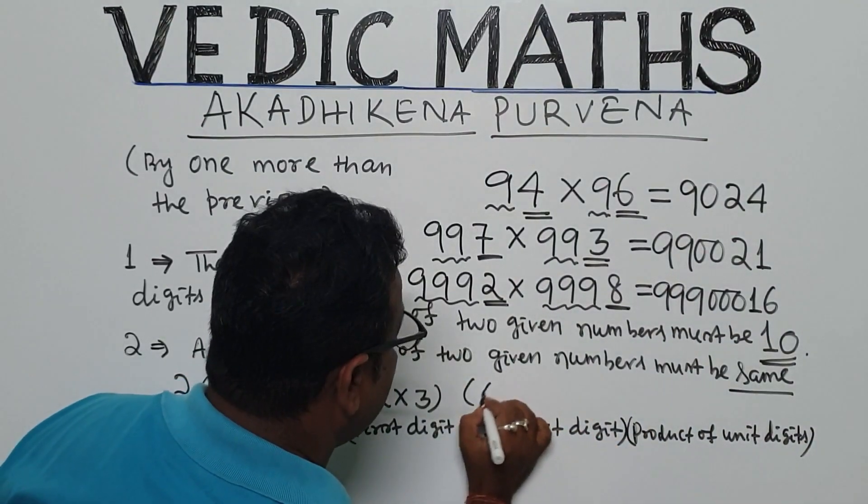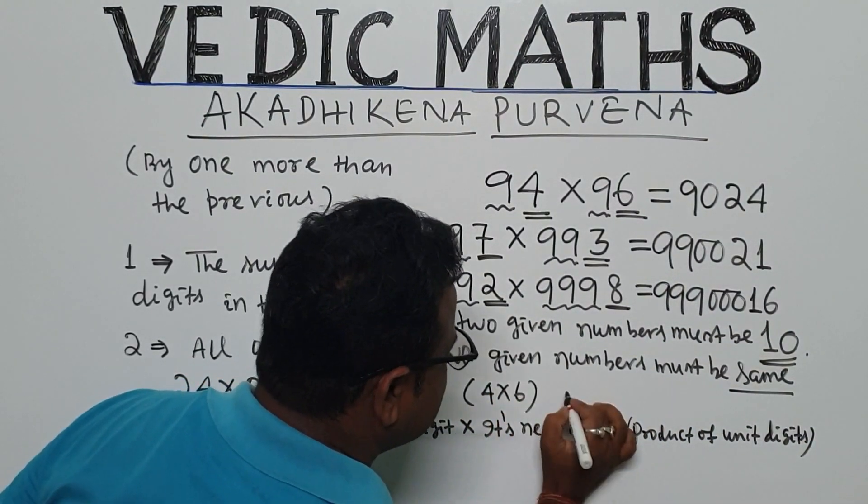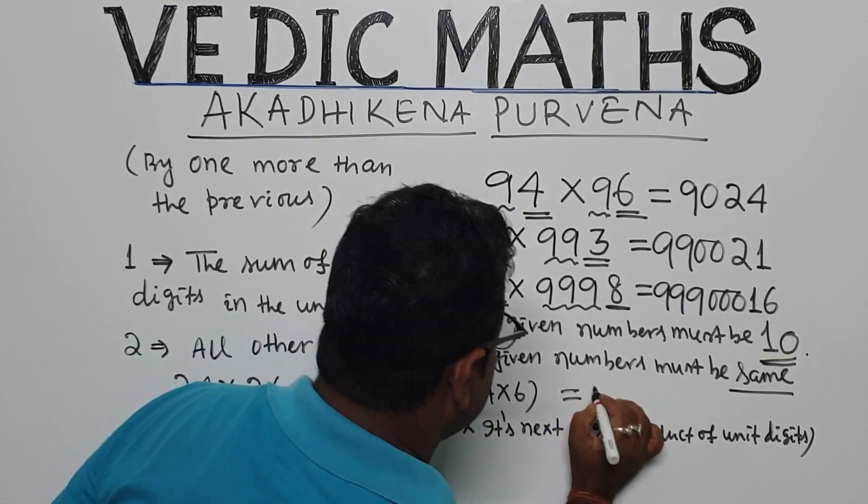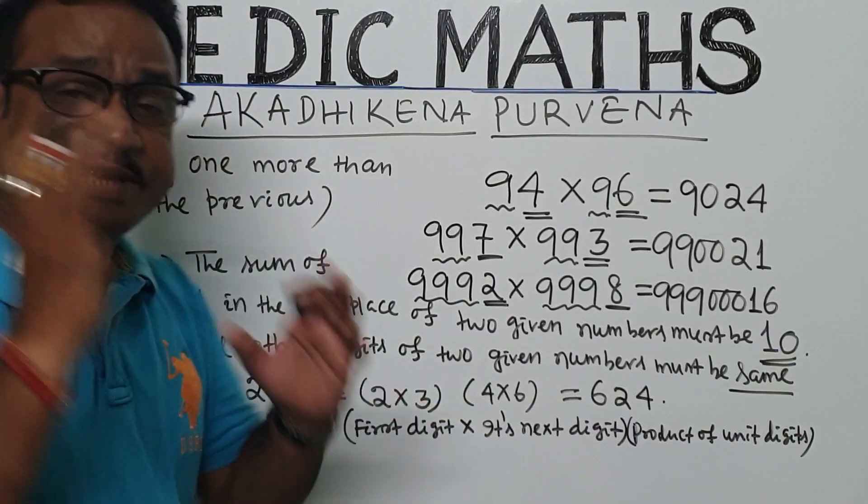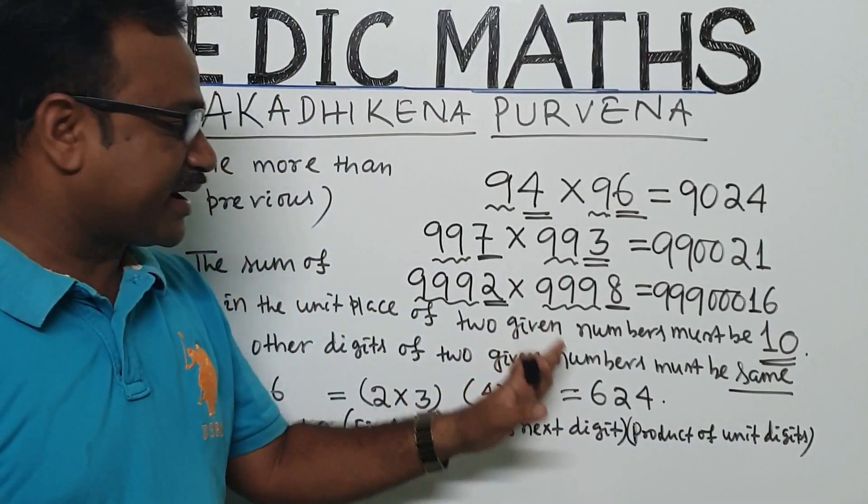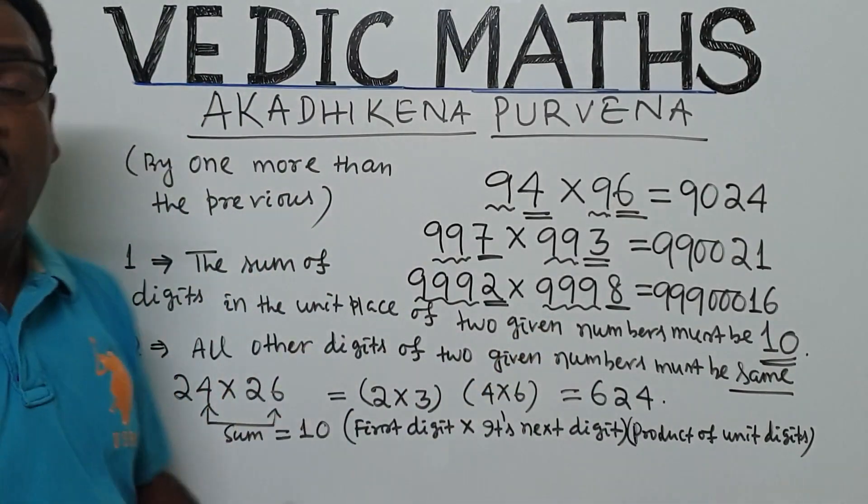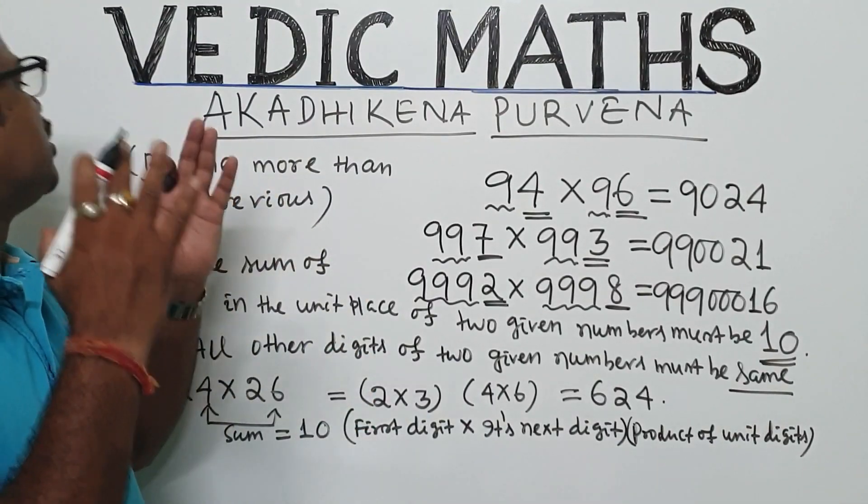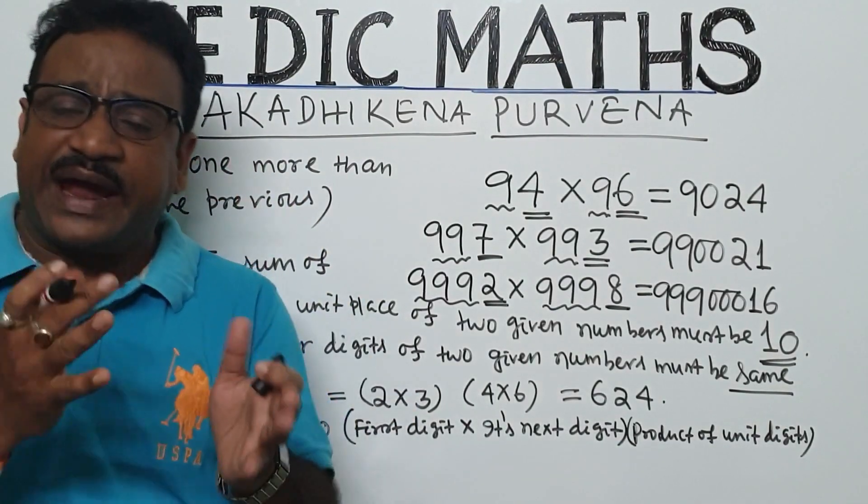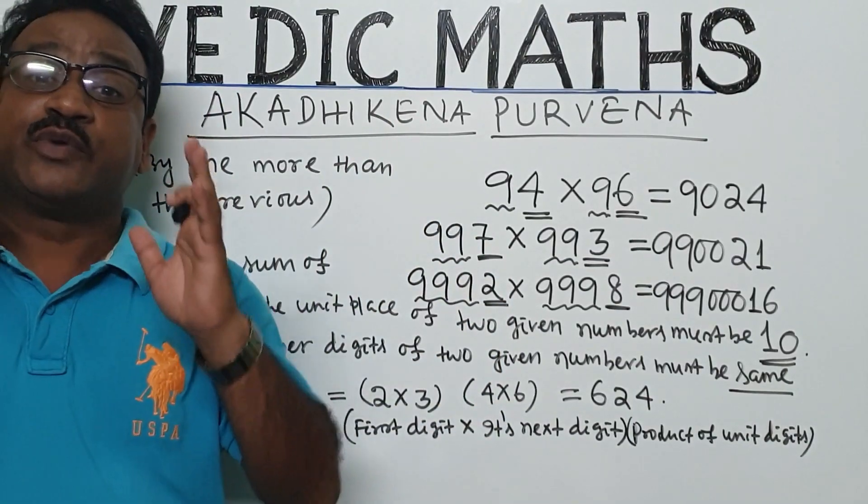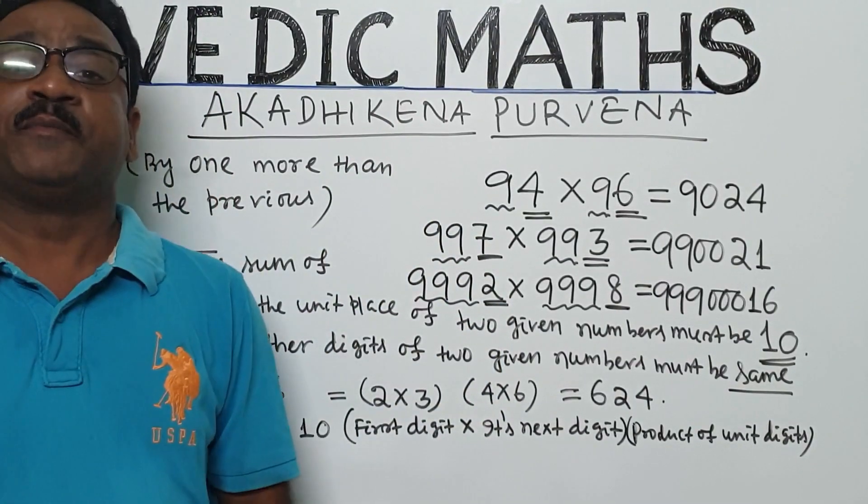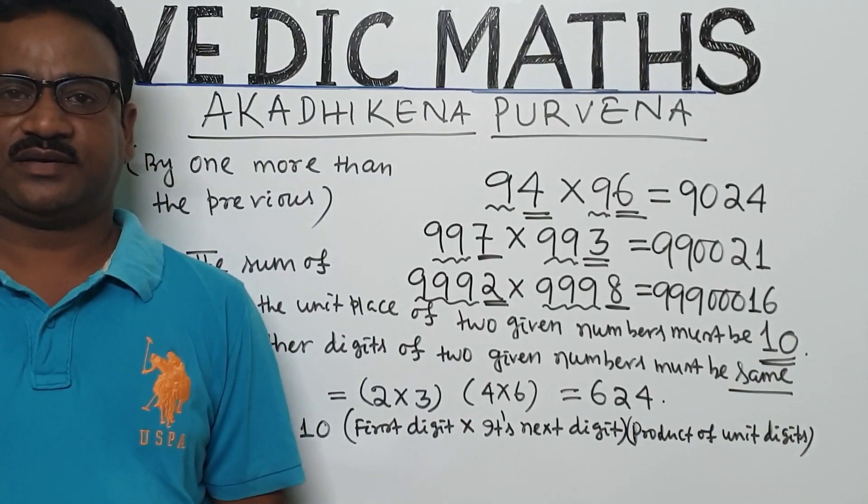Now here, 4 into 6, that is equal to 24. So 624 is the result of 24 into 26. By applying this sutra Ekadhikeno Purveno, we can find out the product of 2 given numbers very quickly and very easily by using Vedic math.